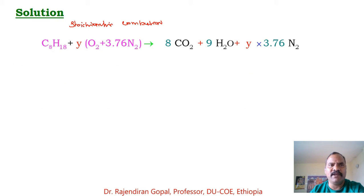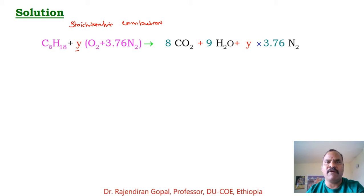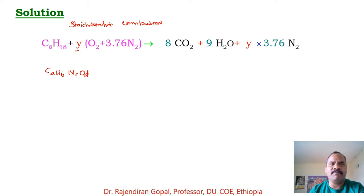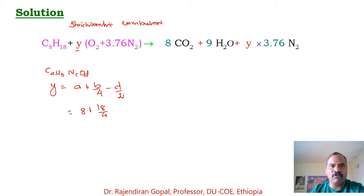First, we write the stoichiometric combustion equation. Octane C8H18 reacts with Y kilomoles of air (O2 + 3.76 N2), producing 8 kilomoles of CO2, 9 kilomoles of H2O, and Y × 3.76 kilomoles of N2. For a fuel CₐHᵦNᵧOδ, the minimum air requirement Y equals a + b/4 − d/2, which gives 8 + 18/4 − 0 = 12.5.